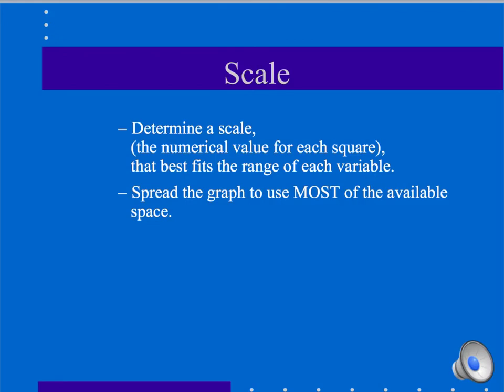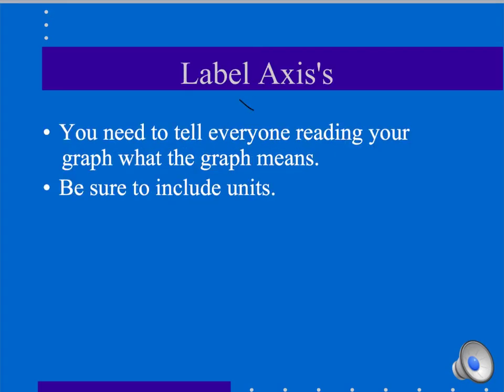Once you've determined the range, you can then determine your scale. We want to make sure that our scale is going to be able to fit most of the available space of our graph. We don't want our graphs to only take up this little portion of our graph paper. We want it to take up the entire or as much as possible of the graph. Make sure that you label both your x and your y axis. We want to make sure to tell everyone very clearly what the graph means. And don't forget units. Units might include minutes that is being recorded. Maybe it's centimeters that the plant is growing in. We usually put the units in parentheses.